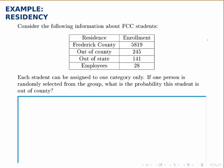We randomly select a person from this group, and we want to know what the probability is that the person we selected is from out of county. So we're looking at this second category.